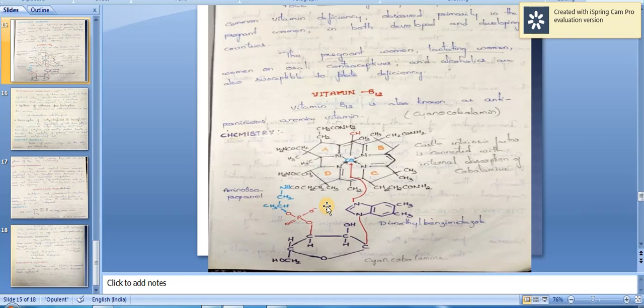Vitamin B12 has cobalt atom in the coordination state of six. Cobalt present at the center of the porphyrin ring is bonded to four pyrrole nitrogens. It is bonded to four pyrrole nitrogens—these are the pyrrole rings here, these are the nitrogen atoms. These four pyrrole nitrogen atoms are bonded with the cobalt.